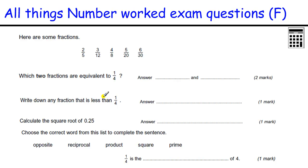Some fractions. Which two fractions are equivalent to a quarter? So a quarter is equal to 2 over 8, equals 3 over 12, equals 4 over 16, equals 5 over 20. We have 3 over 12 and 5 over 20. So two answers.